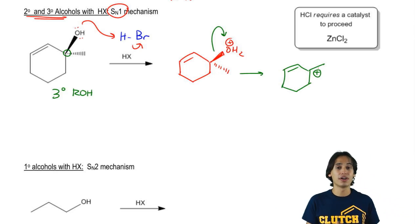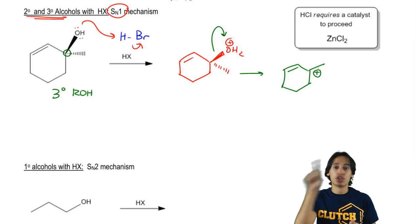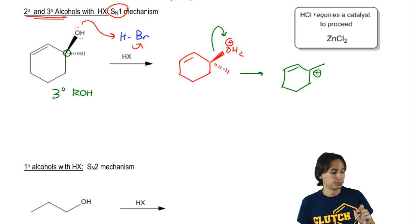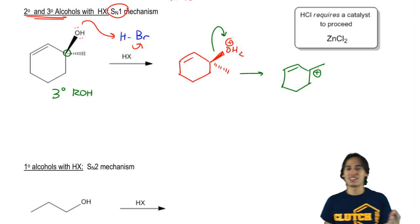The reason is because remember, carbocations are trigonal planar, so you should draw everything on the same plane. It's actually not correct to keep it on the dash. You should just draw everything on the same plane.